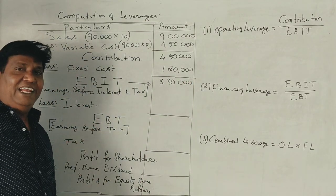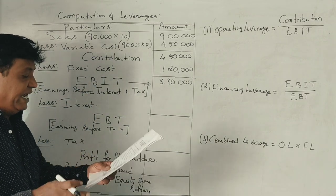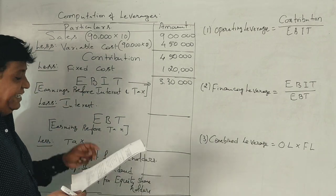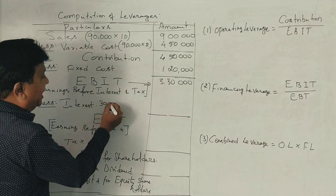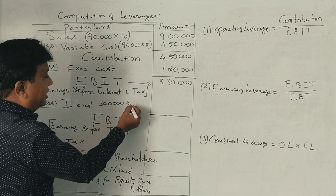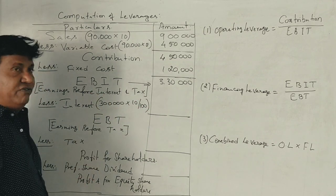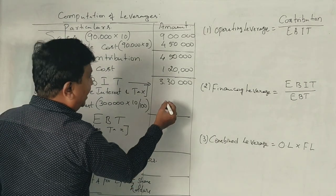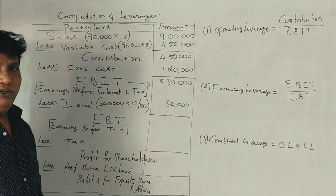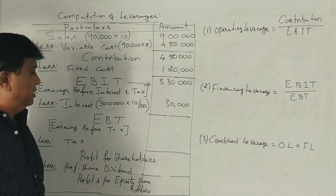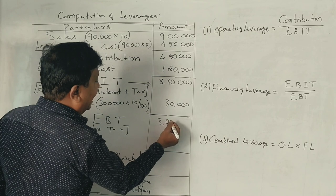From the EBIT of Rs. 3,30,000, we deduct interest. The loan amount is Rs. 3,00,000 with 10% annual interest, which equals Rs. 30,000. So the EBT (Earnings Before Tax) is Rs. 3,00,000.